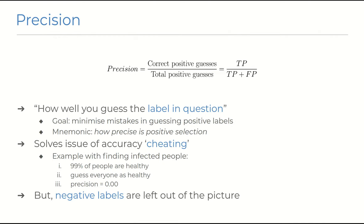However, precision still doesn't paint the entire picture because it doesn't take into account any of the negative labels. And further, this metric can also be defeated if the system just makes one correct positive guess and doesn't make any more predictions, giving it a 100% score.